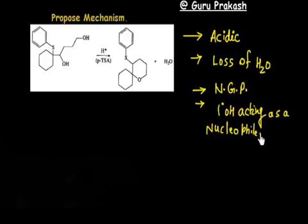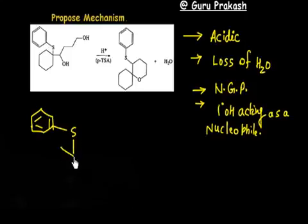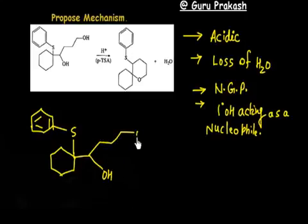Using all these ideas, let us draw the starting compound. You have a benzene ring, then a sulfur attached, and then a 6-membered ring (cyclohexane). Then you have one OH and another OH on the molecule.